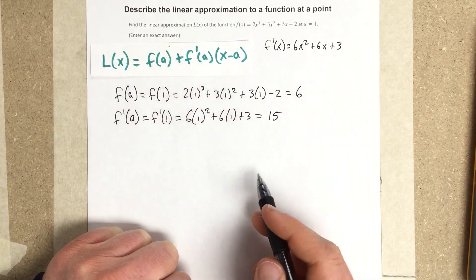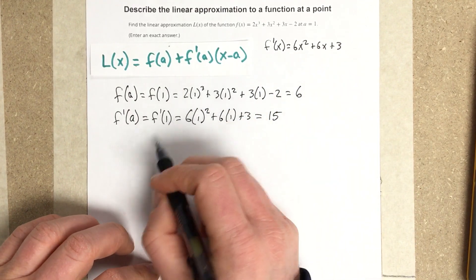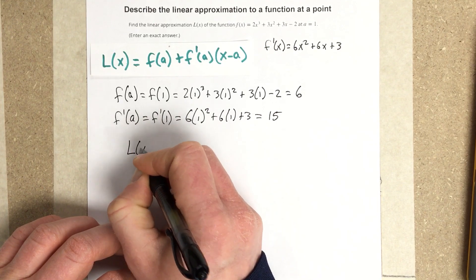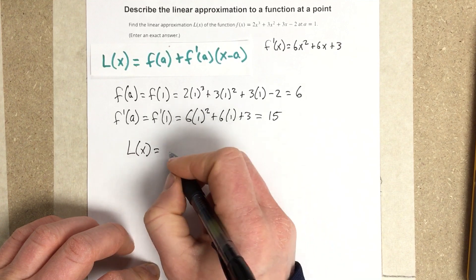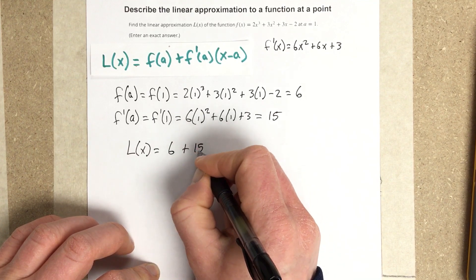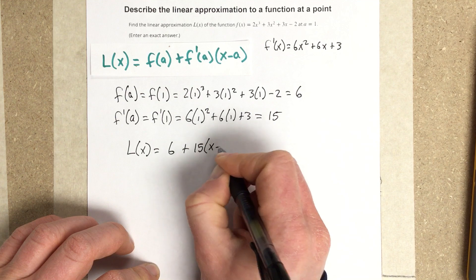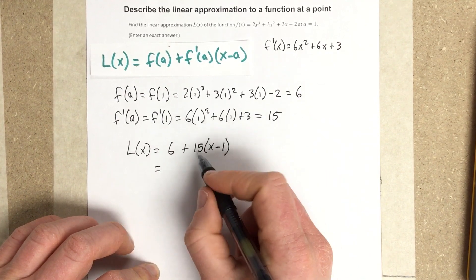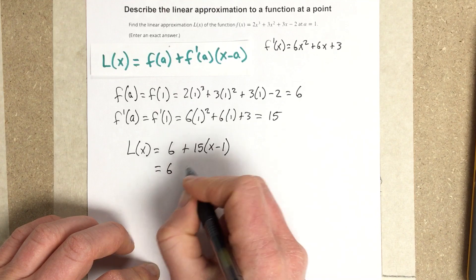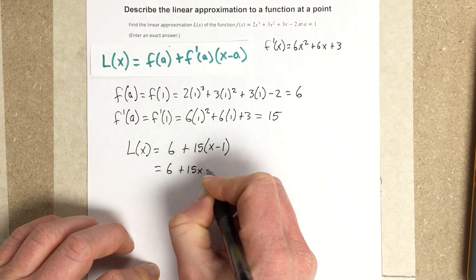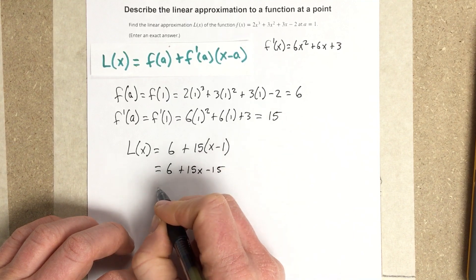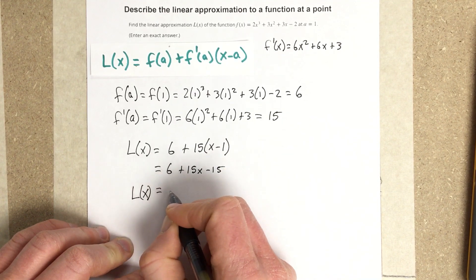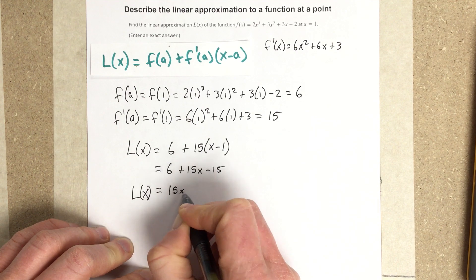Now I'm going to use the formula. L(x) = f(a) + f'(a)(x - a), which is 6 + 15(x - 1). I can distribute here, so I get 6 + 15x - 15. Combining like terms, L(x) equals 15x - 9.